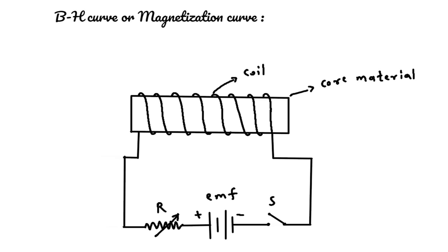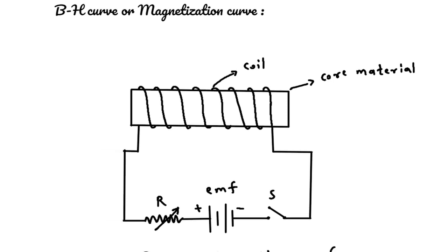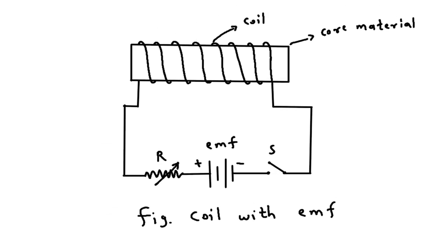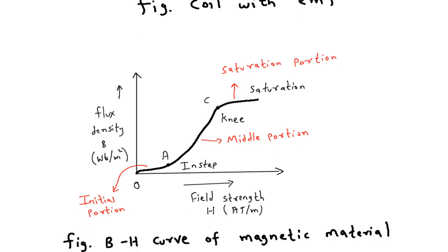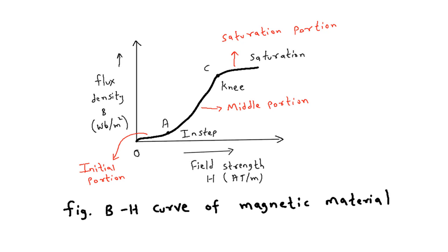BH curve or magnetization curve. The figure shows a coil with EMF and variable resistor. The BH curve is a graph plotted between B, that is flux density, and H, that is magnetic field strength. H is taken on the X axis and B is taken on the Y axis.